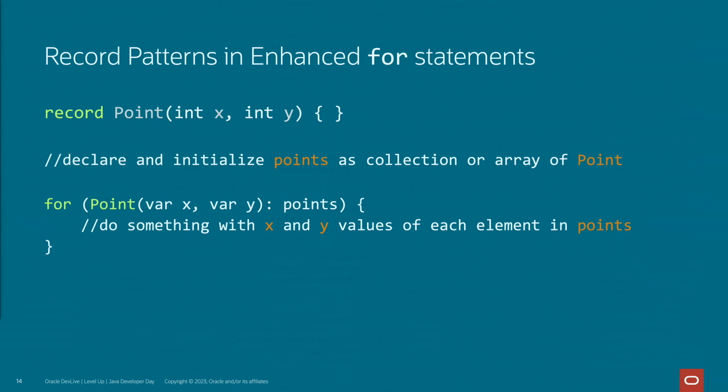The second preview has added support for record patterns to appear in the headers of enhanced for statements. In this example, if we want to iterate over a group of points and do something with the components, we don't have to introduce that extra variable and then read from it — we can get the values directly.